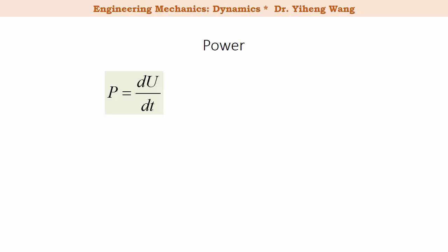Power is defined as the time derivative of work, P equals dU over dt. Since dU equals the dot product of the force vector and the position vector dr, therefore power equals the dot product of the force and dr/dt. From kinematics, dr/dt is the time derivative of position, which is the instantaneous velocity, therefore power is simply the dot product of the force vector and the velocity vector.